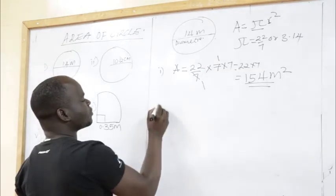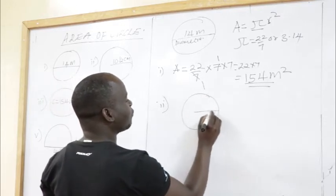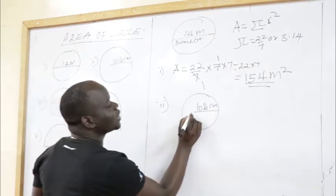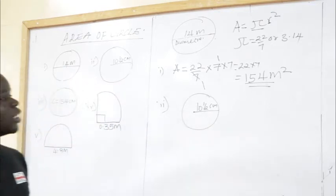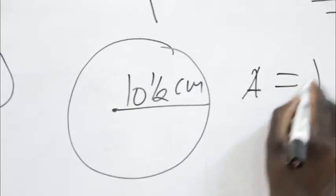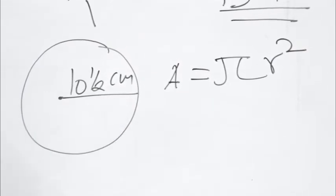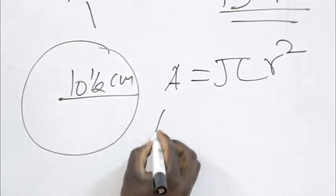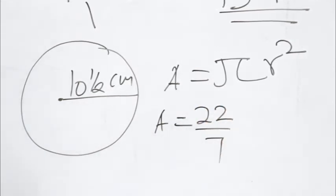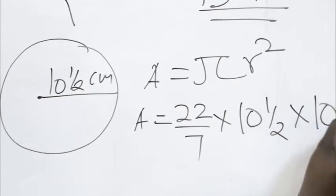Example number two: we are given half of the line, which represents the radius, so we do not need to convert. We write the formula: Area = π r². In this case we are given a mixed number radius of 10 and a half centimeters. So: Area = 22/7 × 10½ × 10½ centimeters.